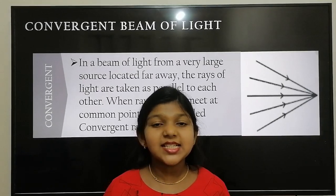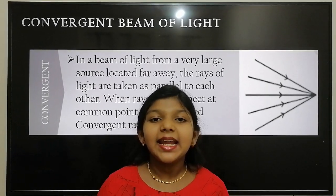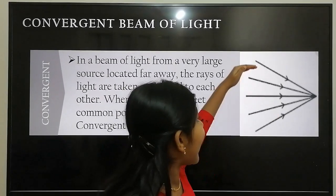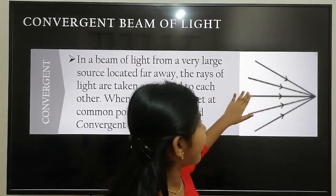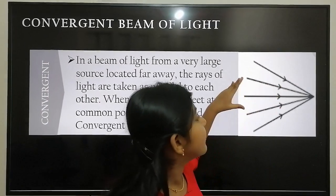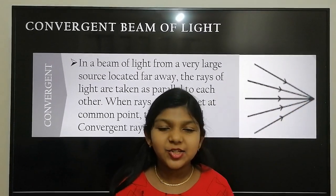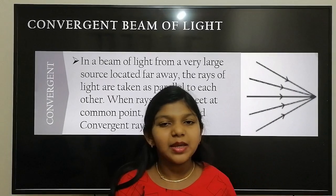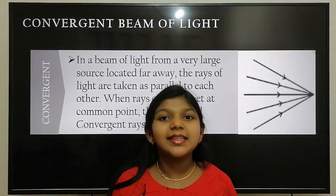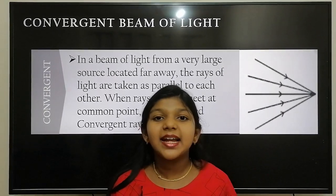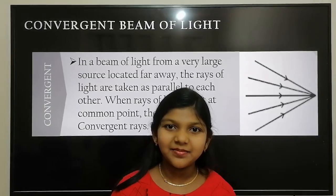The last is convergent beam of light. In a beam of light from a very large source located far away, the rays meet at a specific point. Then it is known as convergent beam of light. For example, the light rays that enter our eyes converge at our retina.